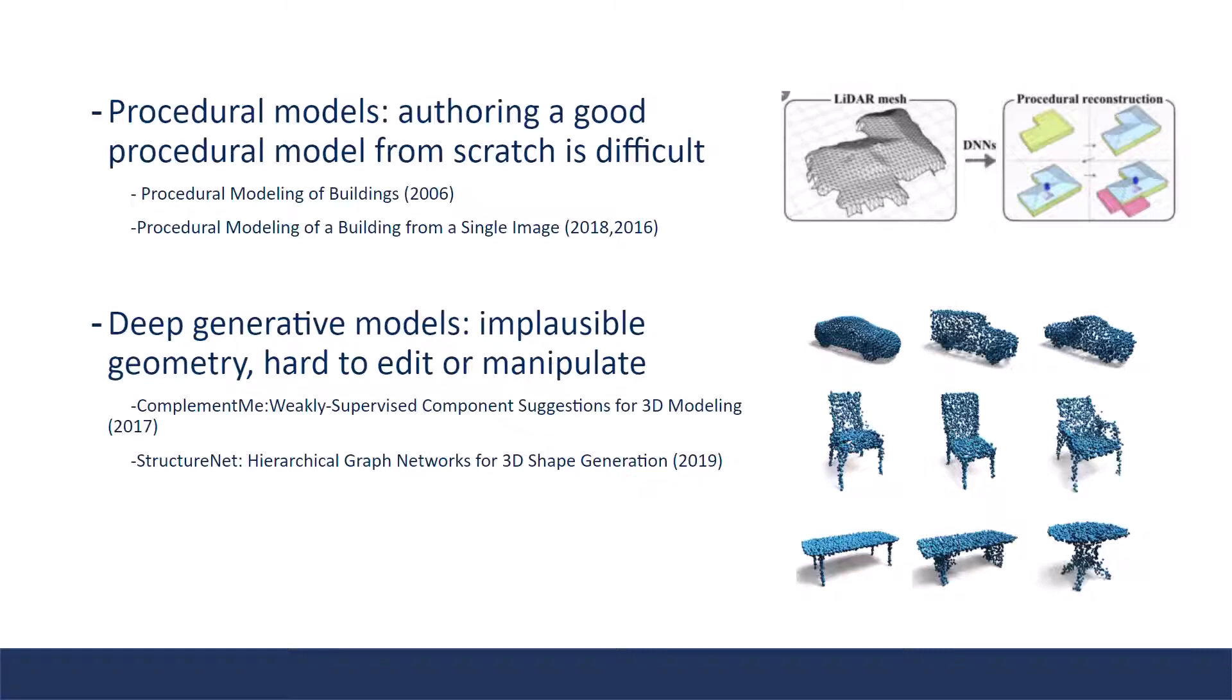The other way is deep generative models. They can learn to generate 3D shapes directly from data. However, the quality is not guaranteed. There are always some noises, and the representations are also hard to edit.